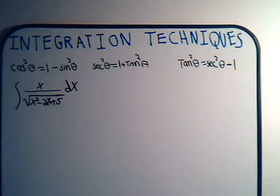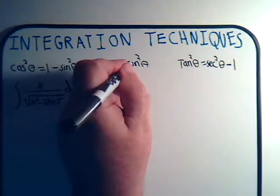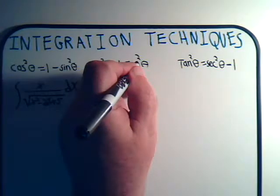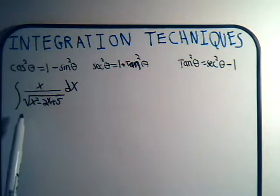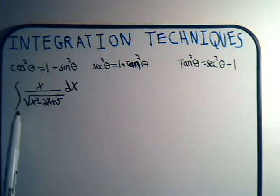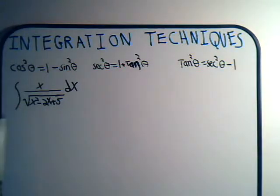We're going to consider some integrals that have quadratic expressions in them. The reason why we're looking at them now is that many times when you do the proper manipulations on them, they turn into a form amenable to being solved with a trig substitution. For example, the integral of x divided by the square root of x squared minus 2x plus 5.